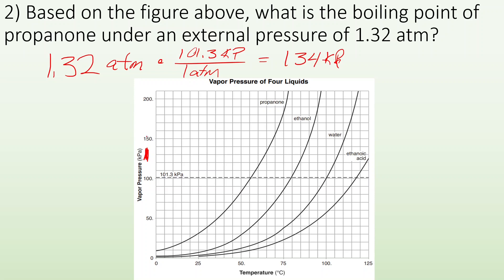So I look at my chart — 134 is going to be roughly at 110, 120, 130, 134 right here. The liquid I'm looking at is propanone. I follow that line over, hit it right about here, and follow it down. That is about 65 degrees Celsius. So at 65 degrees Celsius, propanone will have a vapor pressure of 1.32 atmospheres.